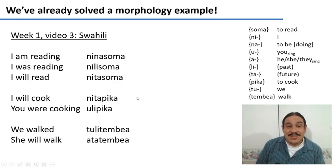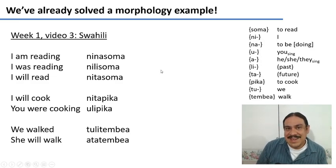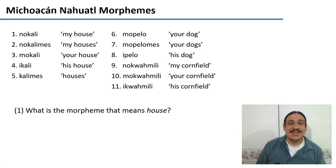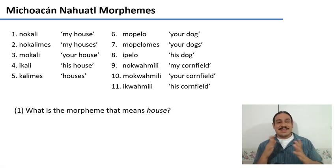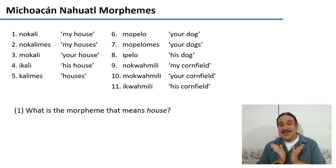By observing patterns in the words, we managed to figure out what every bit meant. And we're going to do the same thing again with a language from Mexico called Nahuatl, spoken in Michoacán. Take a look at this data here. It has Nahuatl words for 'my house,' 'my houses,' 'your house,' 'his house,' and 'houses.'